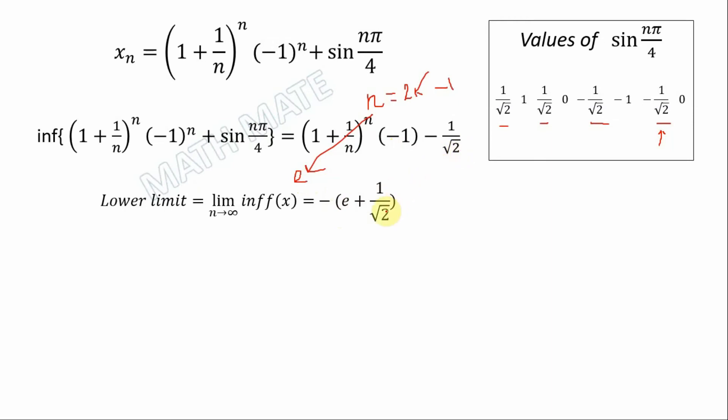And for upper limit we should calculate supremum. So let's n equals 2k, that's even numbers of n. We want to have a positive sign for this reason in order to raise the value of the expression.